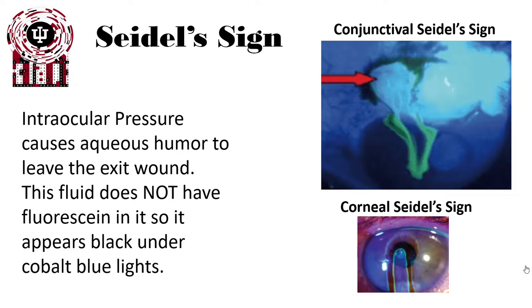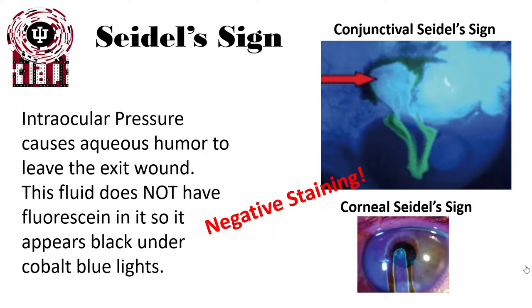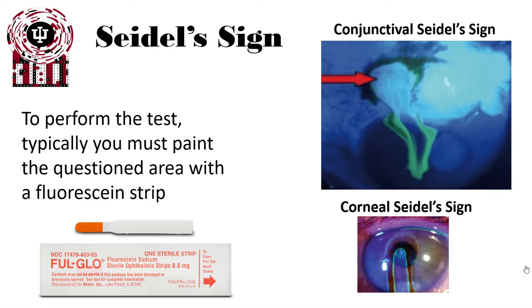This is entirely due to intraocular pressure causing aqueous humor to exit the wound. Since this fluid has no fluorescein, it appears black under cobalt blue light. On the right we can see two versions: a corneal Seidel sign on the bottom and a conjunctival positive Seidel sign on the top. These are examples of negative staining. To perform this test, you can't just instill general fluorescein across the whole eye — you need to paint fluorescein on using a fluorescein strip in that specific area to observe what happens as the fluid moves.